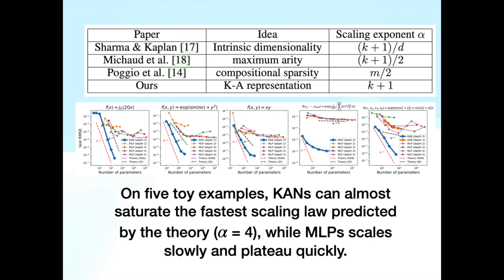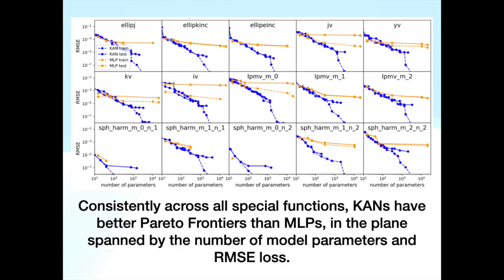On five toy examples, KANs can almost saturate the fastest scaling law predicted by the theory, while MLPs scale slowly and plateau quickly. Consistently across all special functions, KANs have better Pareto frontiers than MLPs.